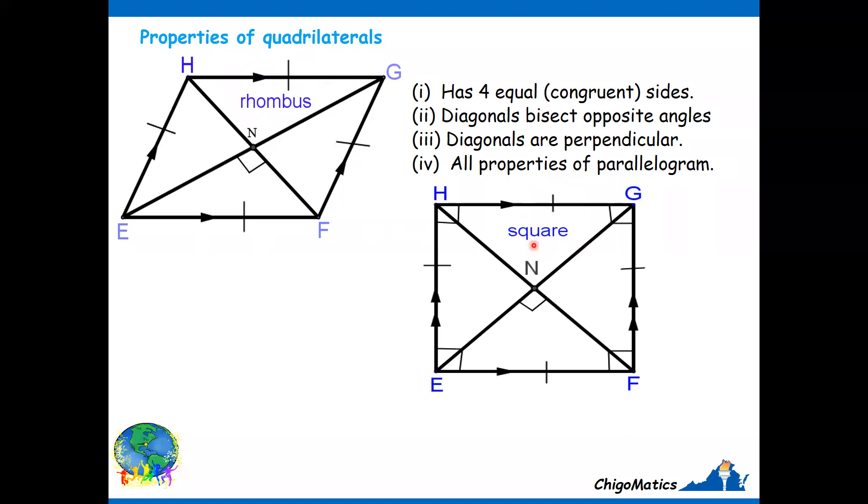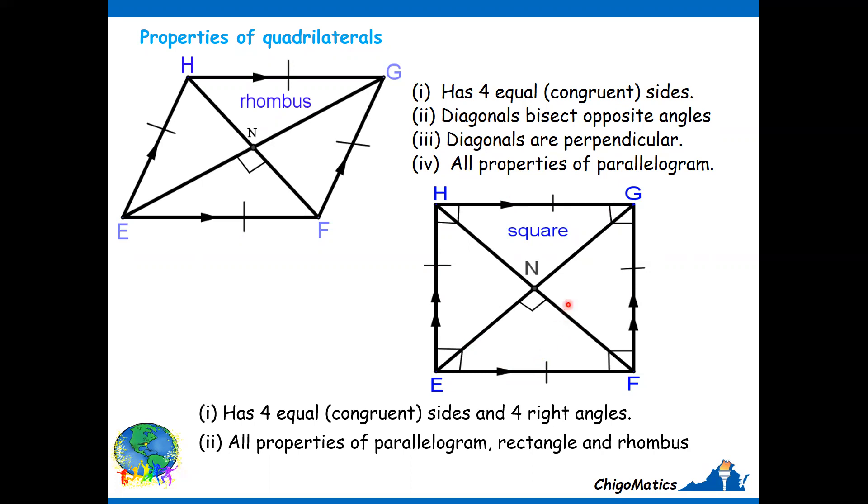Then we look at the square. The square has four equal sides and four right angles, as denoted by the strokes and the right angle symbols. And then all properties of the parallelogram, of the rectangle, and of the rhombus are found in the square.